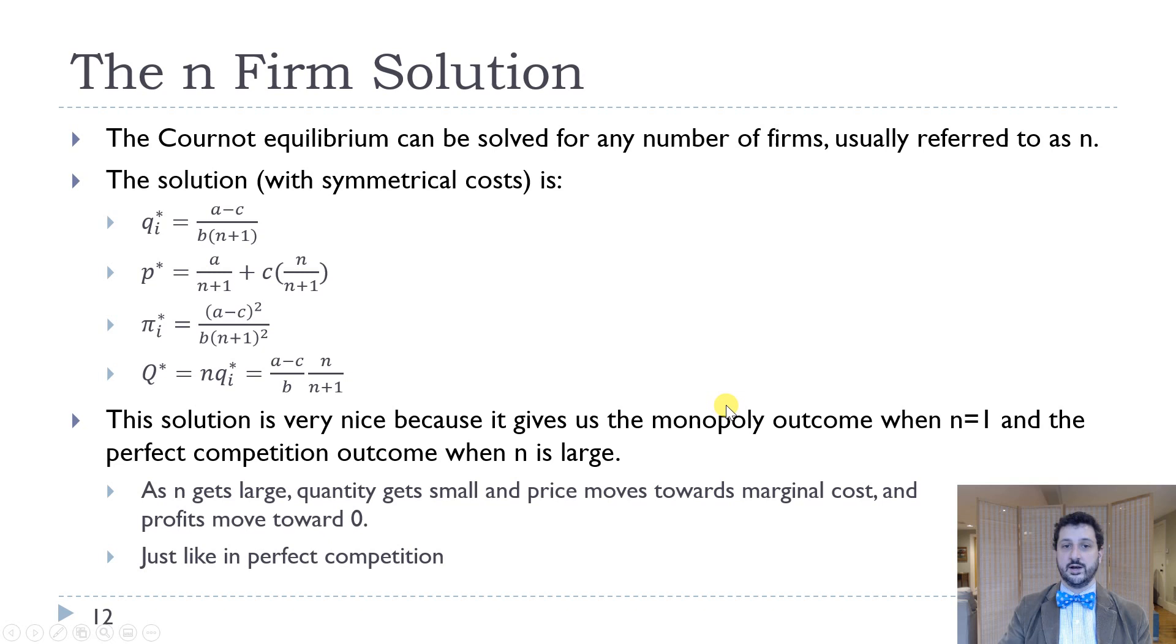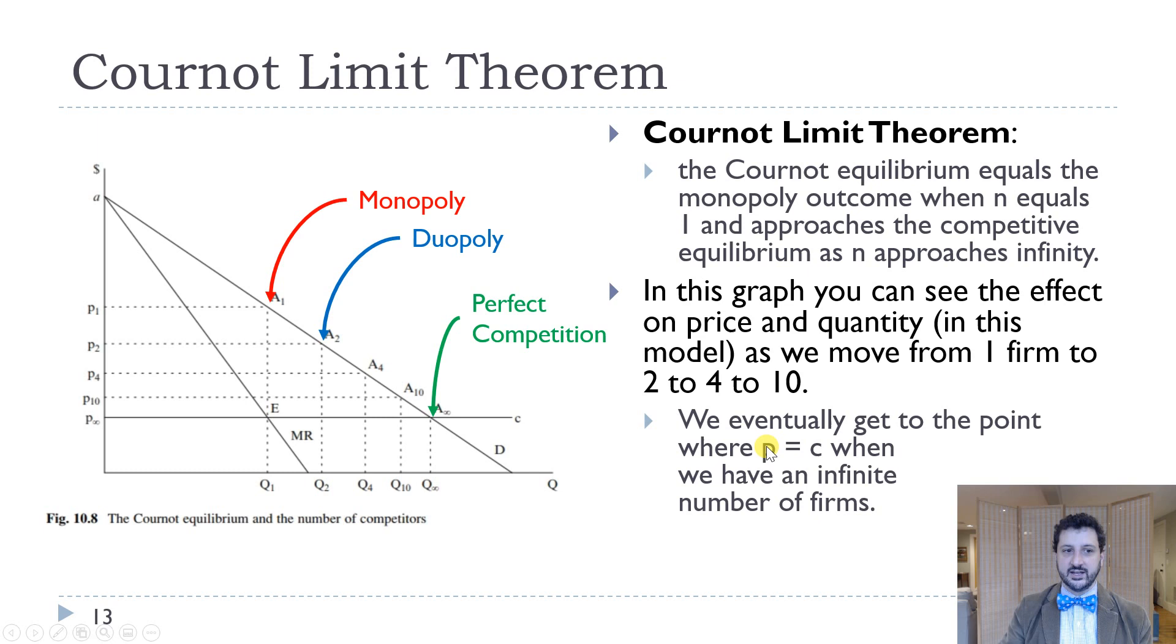So that's a nice solution. You can plug it in if you have N equals 3 or 4 or 5. And then graphically, it's nice as well because it shows, all right, well, here's our monopoly price and quantity. That's where marginal revenue equals marginal cost for a monopoly. And then the duopoly, four firms, 10 firms, and then an infinite amount of firms basically just gets us to our perfect competition outcome. And so that's why I think people like the Cournot model so much is it just nests so well in our various models.